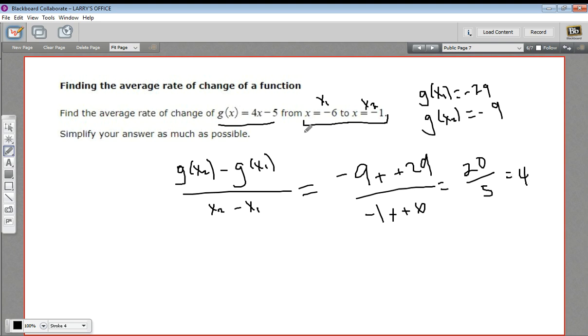So we come back to the idea that the average rate of change of a function is just its slope, and we had a straight line here. Its slope was 4.